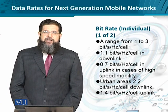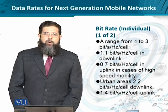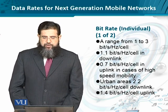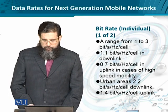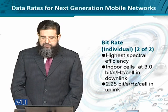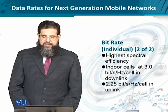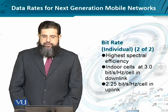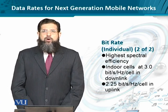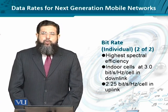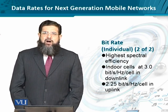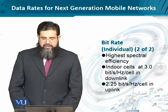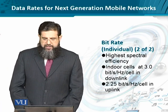In relatively urban areas with high population density but clear line of sight, we can expect the downlink to increase to 2.2 bits per second per hertz and 1.4 in the uplink respectively. When we reduce the overall cell size — such as microcells, picocells, or femtocells — since we reduce the distance and the number of obstructions causing fading and other channel impairments, we can expect up to 3 bits per second per hertz in the downlink and 2.25 in the uplink.